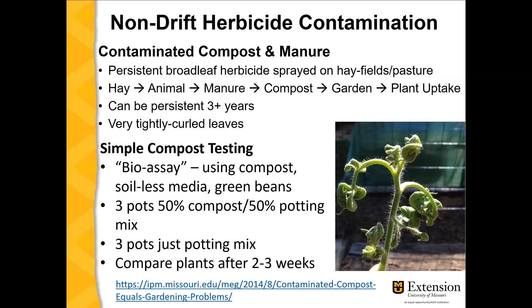Contamination from compost produces very tightly curled leaves. There is a simple test you can use called a bioassay using green beans, where you plant some pots with the compost in question and some pots with just potting mix, and see if there's any difference in the green beans between those two treatments. If there is no difference, you can be pretty sure there's no contamination issue. We do have a good publication that talks more about this and how to do the green bean test.